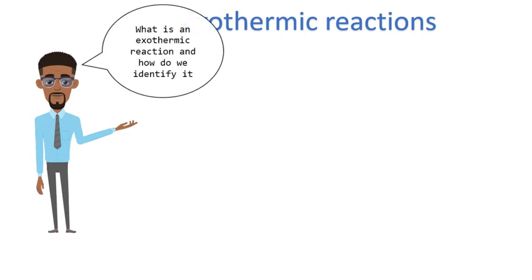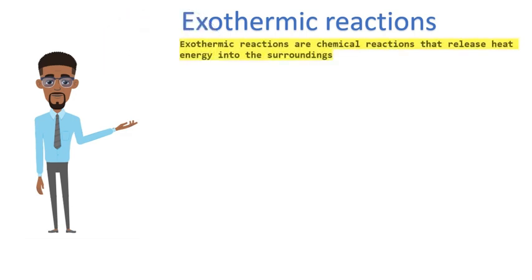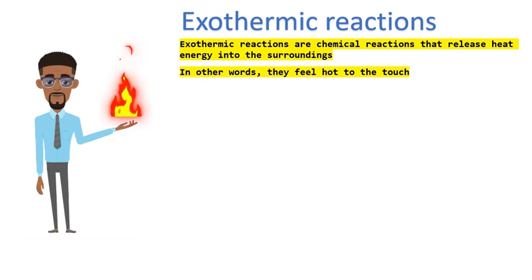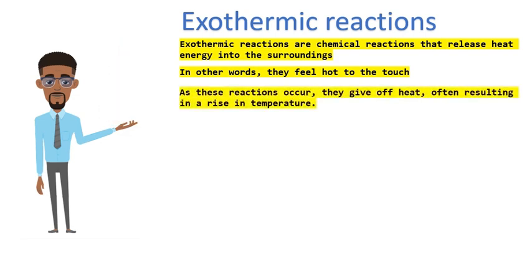What is an Exothermic Reaction and how do we identify it? Exothermic Reactions are chemical reactions that release heat energy into the surroundings. In other words, they feel hot to the touch. As these reactions occur, they give off heat, often resulting in a rise in temperature.